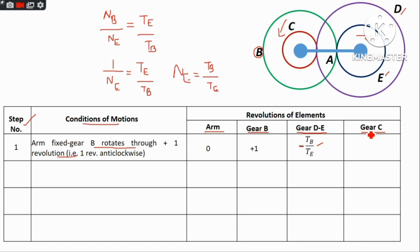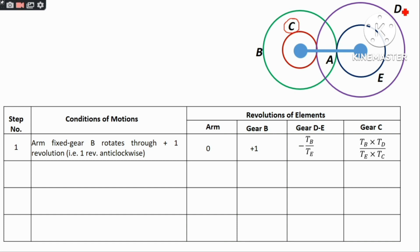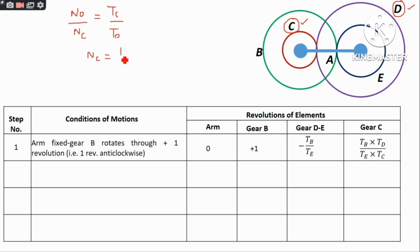Now we find the revolution of gear C. The overall gear ratio from B to C through the compound gear is: TB into TD divided by TE into TC. Input gear D, output gear C: Nd divided by Nc equals TC divided by TD. So Nc equals Nd into TD divided by TC.